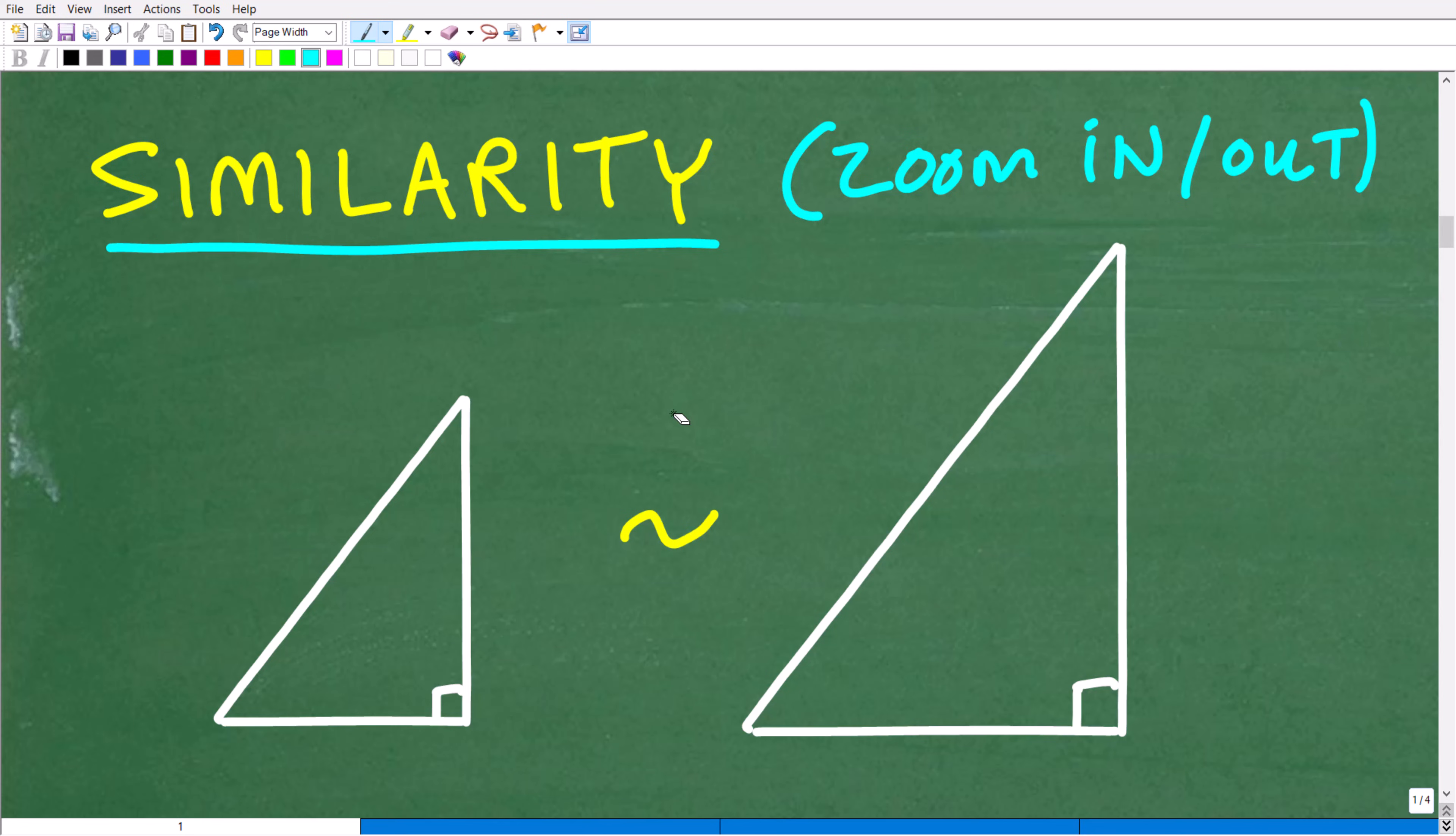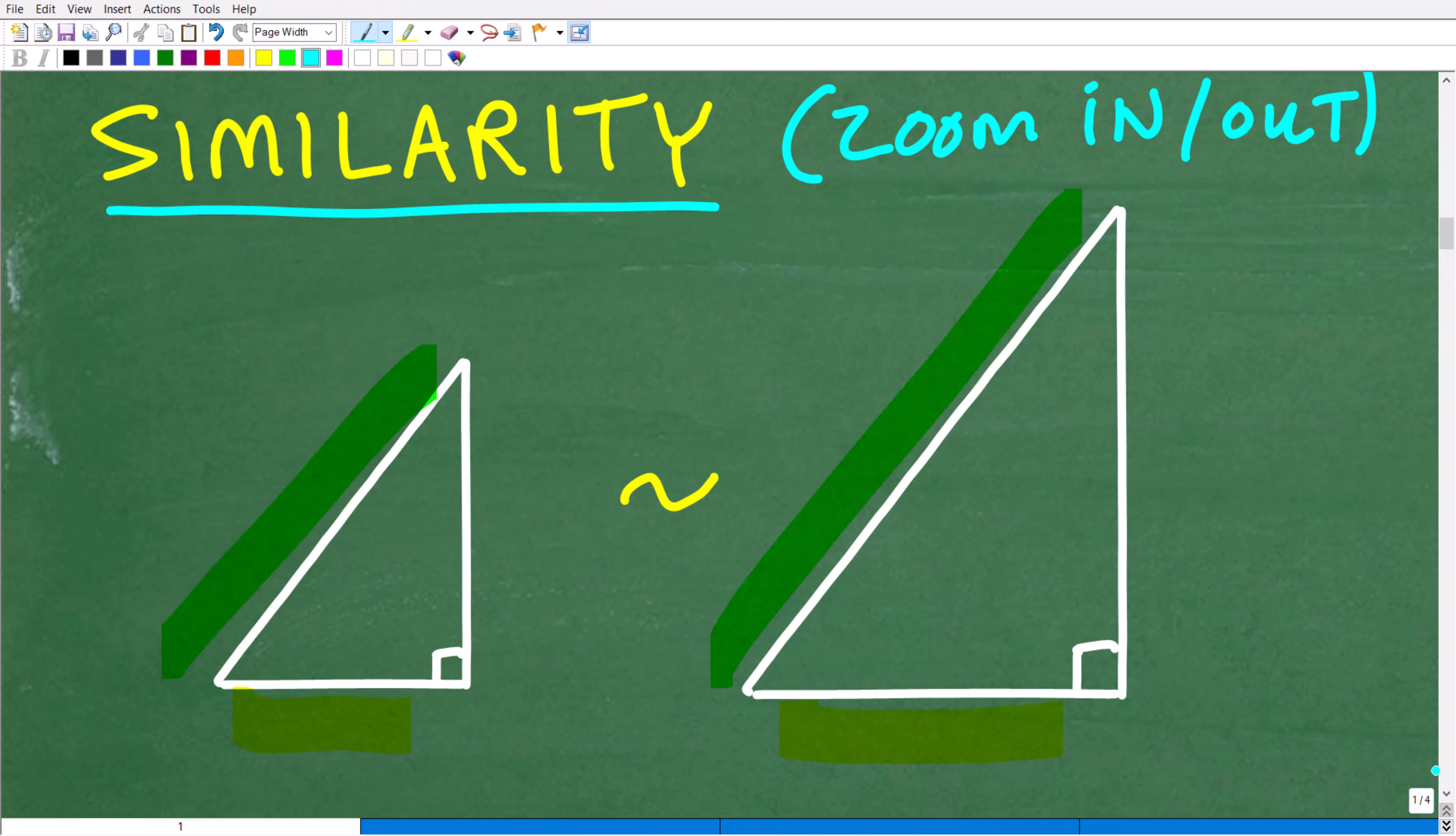So in similar figures, they have the same shape, but not the same size. So that is what a similar figure is, and of course, we're talking about similar triangles. Now, here is the big thing that we need for this particular problem is that when you have similar figures, you could compare any two sides, and those sides will be in proportion to one another. And this is going to be the key to doing this problem.